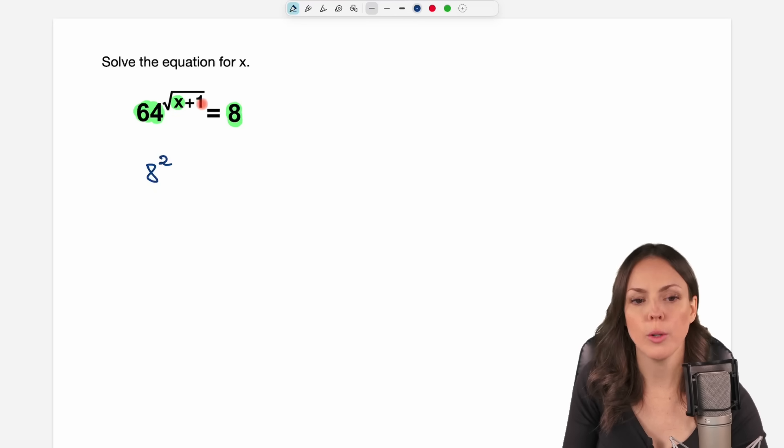I still have my exponent, so I have to write this in parentheses, my 64, and take my beautiful exponent, the square root of x plus 1. On the other side I still have my 8.